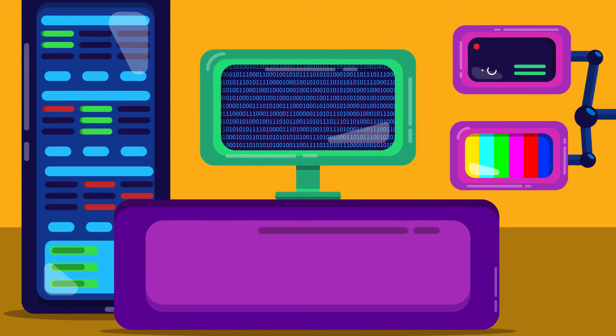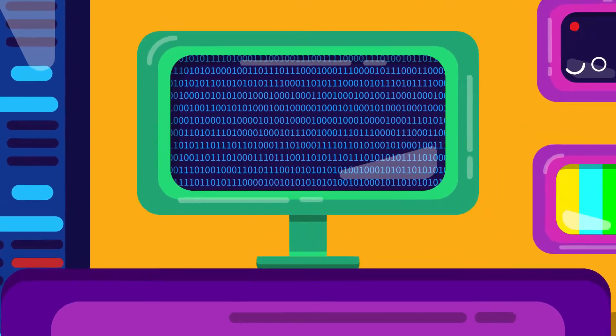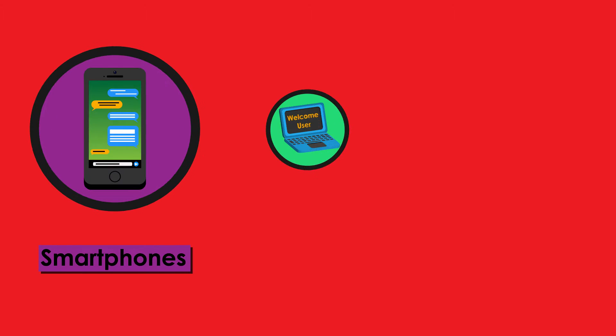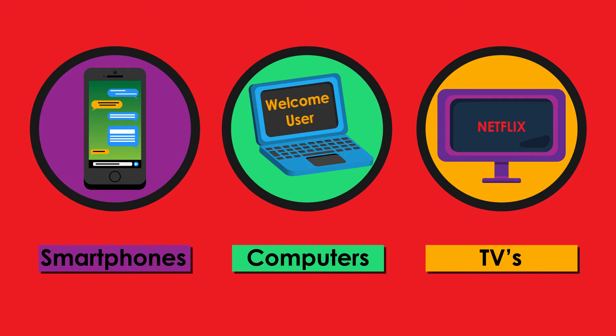The main interface between man and computer is a display screen that shows binary code in a language that we can understand. Numerous displays such as those of smartphones, computers, and TVs make use of pixels.